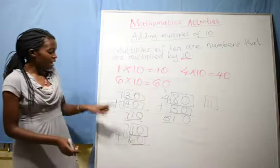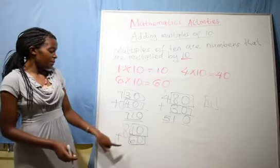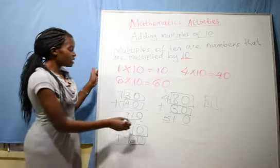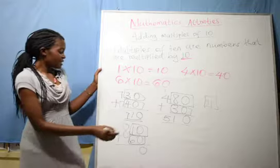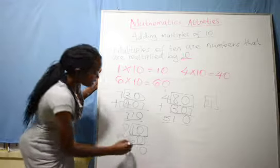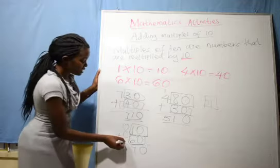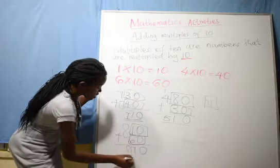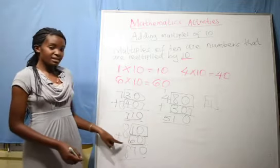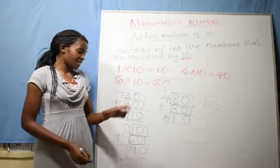Now, we are going to add 810 plus 60. 0 plus 0, 0. 6 plus 1, we get 7. Good. 8 plus 0, we get 8. Now, 810 plus 60, we get 870.